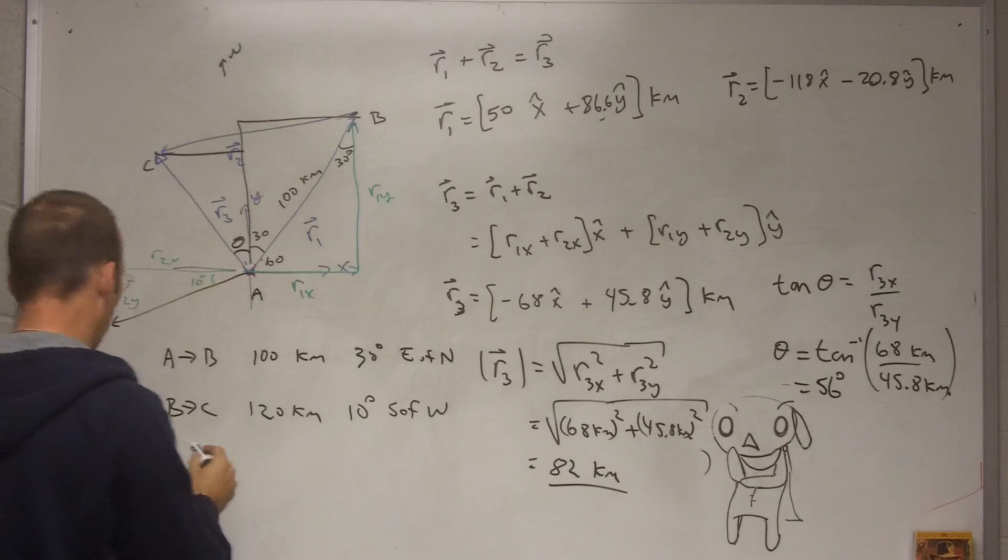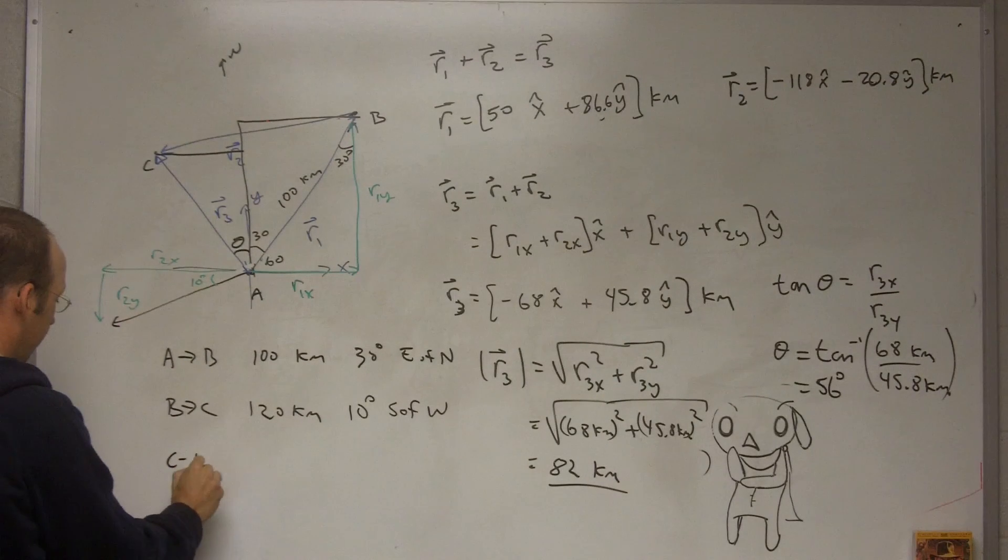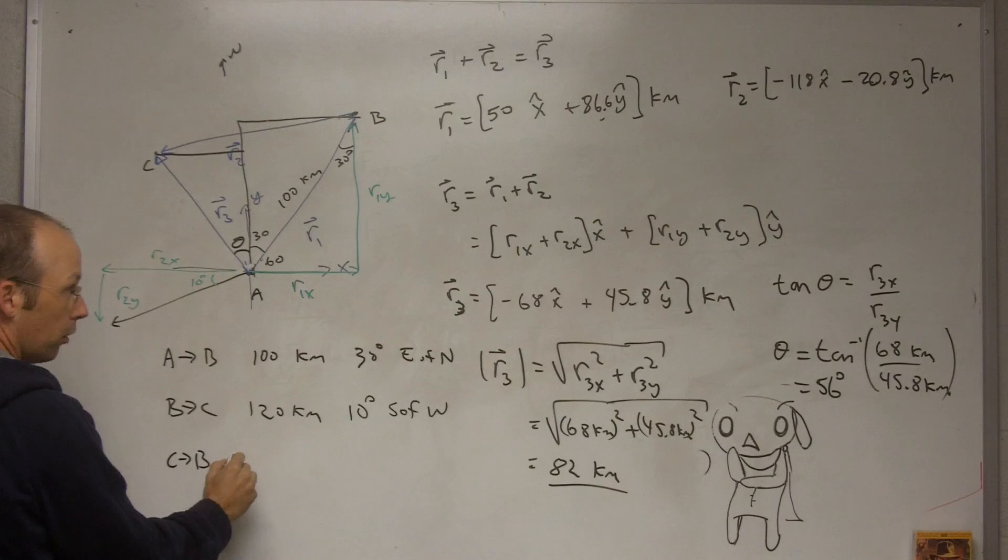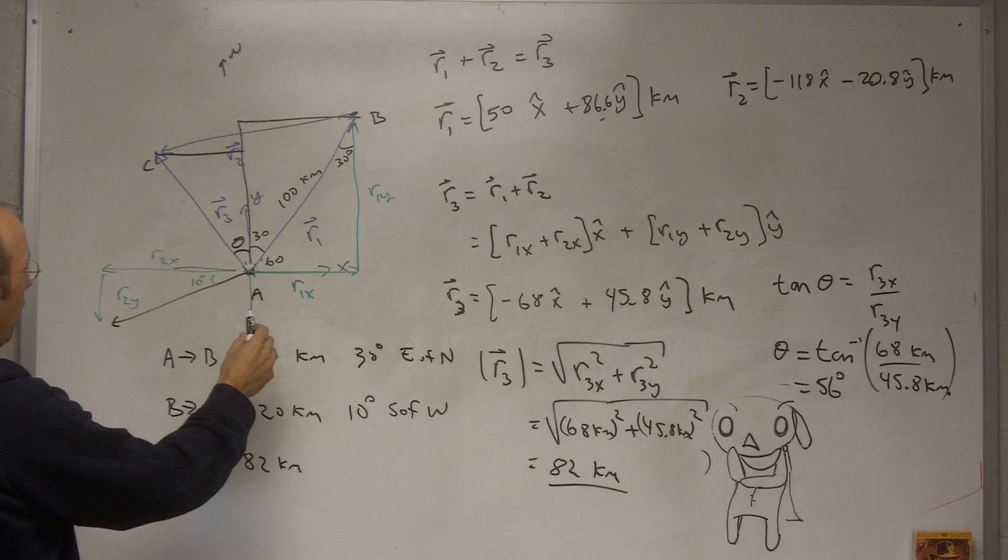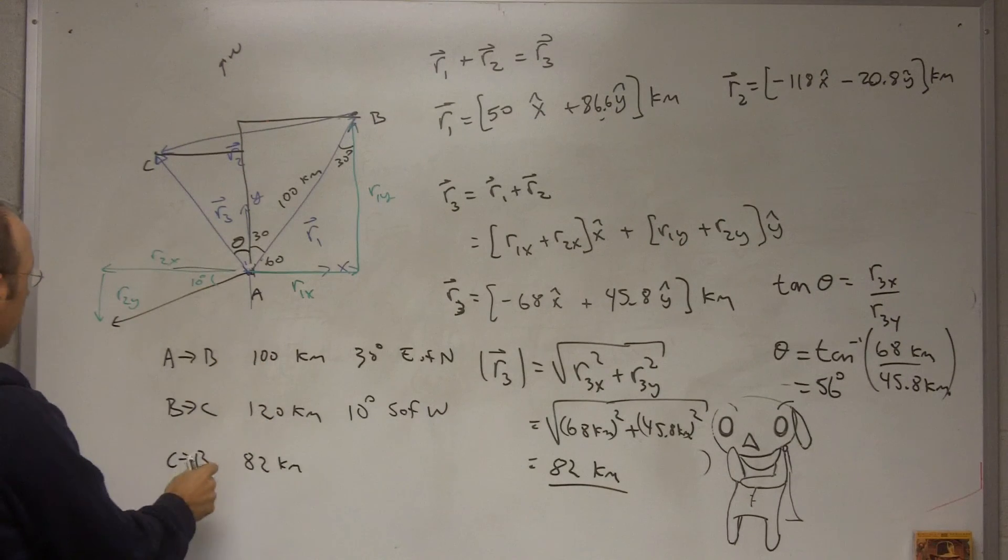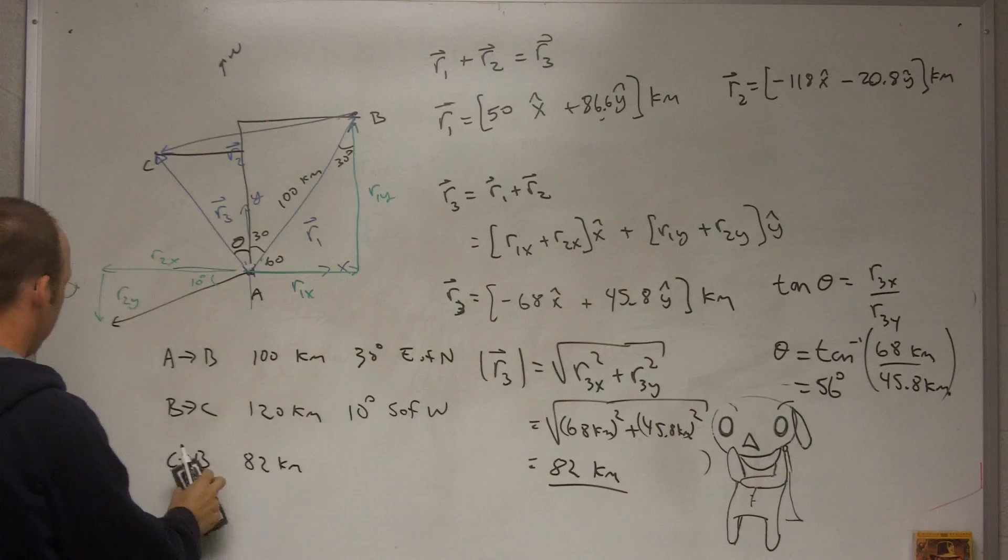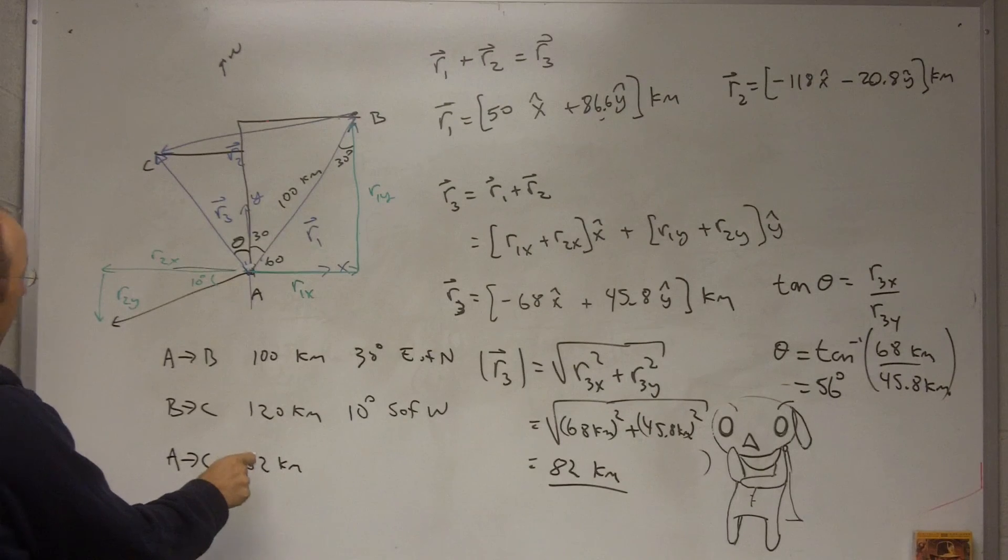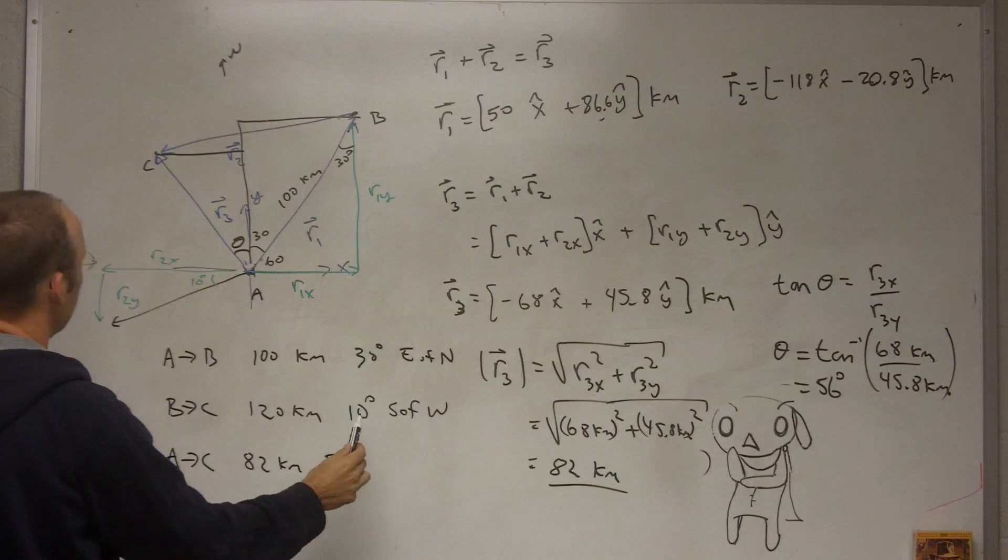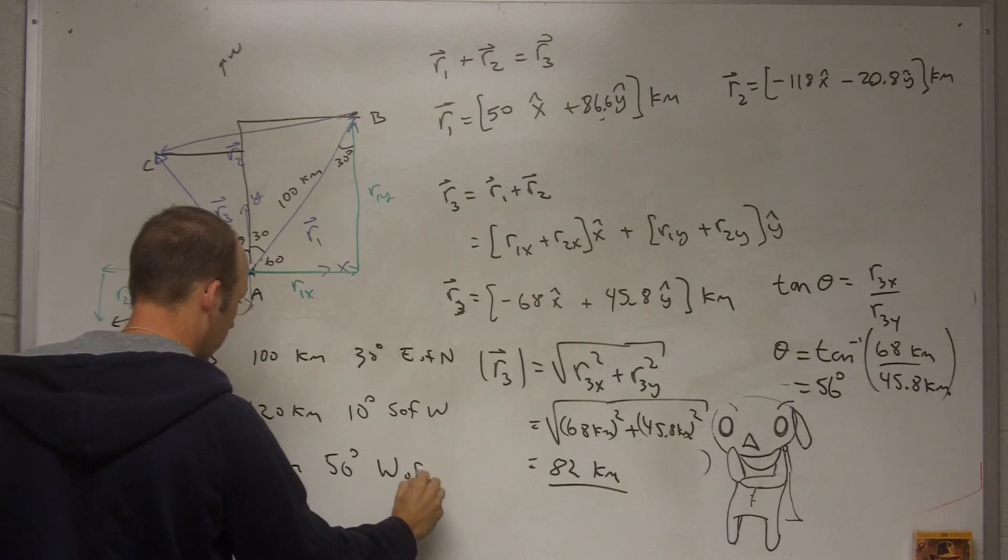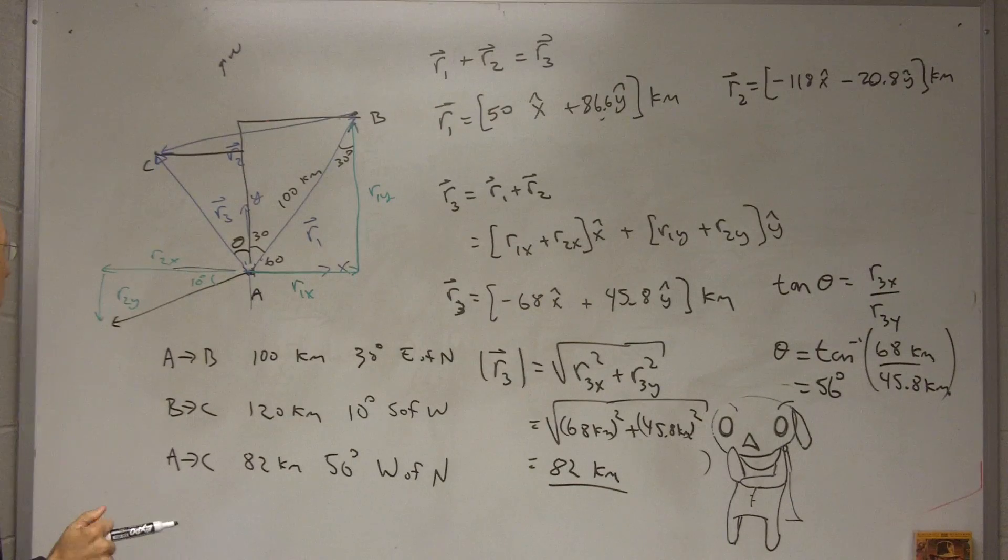So this angle is 56. So I could say, in the end, C to, A to C, it's going to be 82 kilometers and 56 degrees west of north. And then you could just go backwards the same distance in the opposite direction.